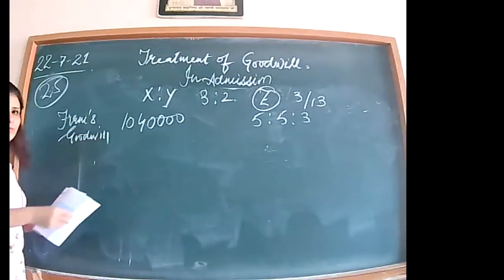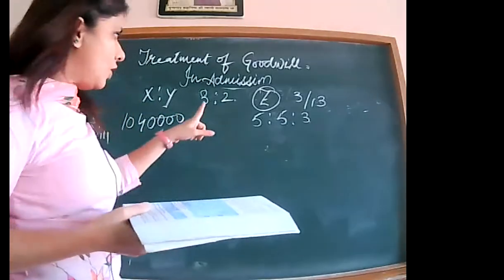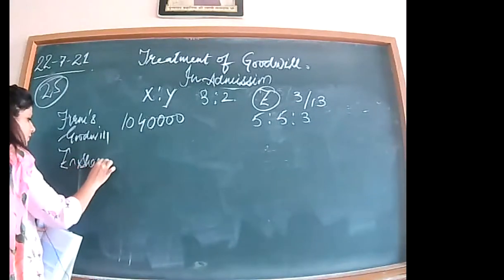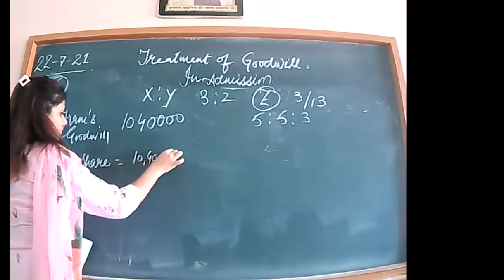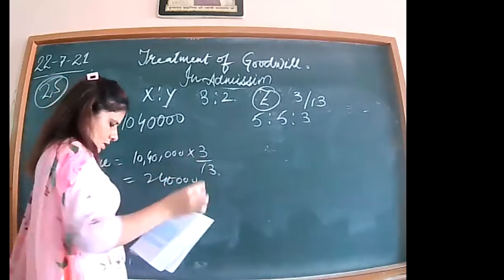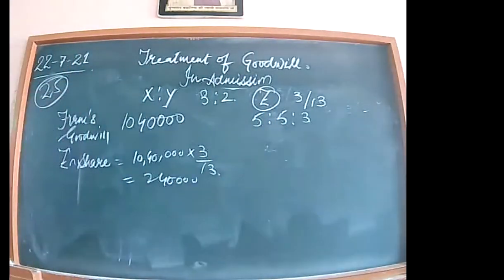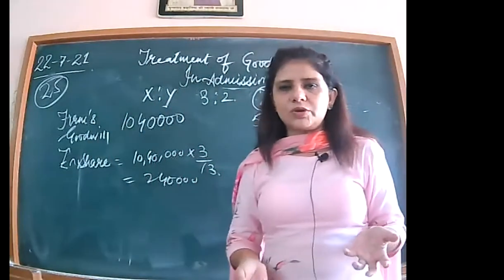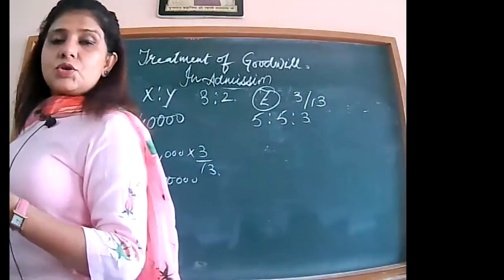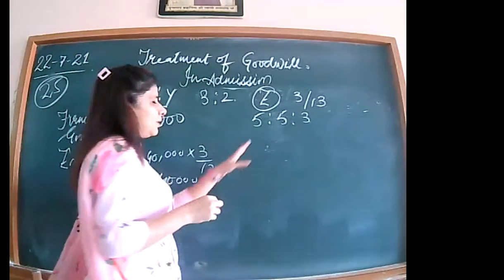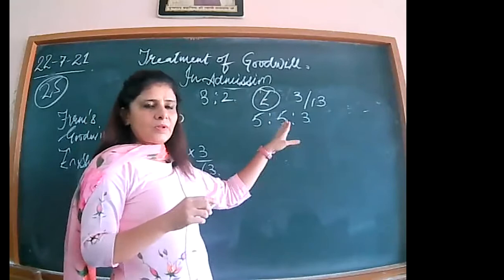We need to calculate Z's share of goodwill. Z's share of goodwill comes to 2,40,000. Now because the capital amount is not directly given, capital contribution is a missing value — a balancing figure. Before that, I need to calculate the sacrificing ratio. Old ratio is 3 is to 2; new ratio is given.